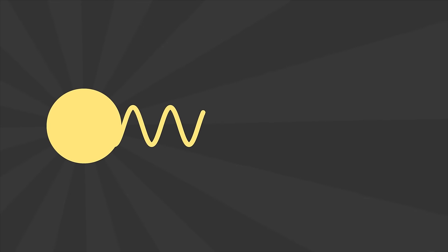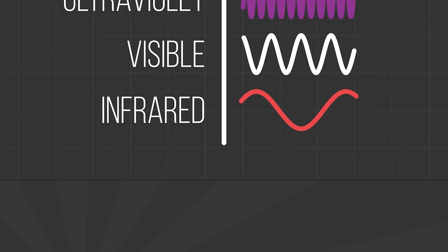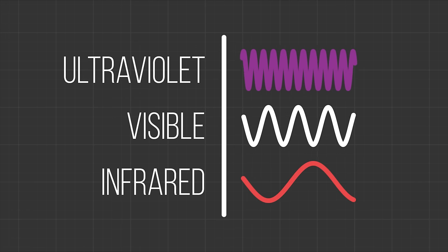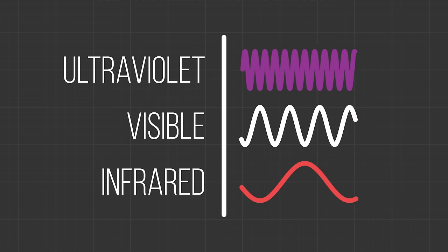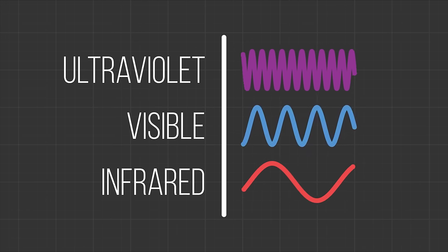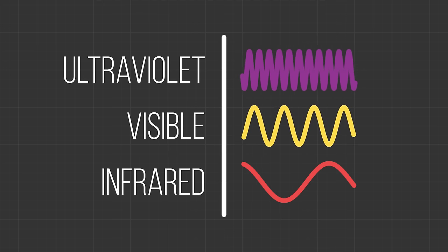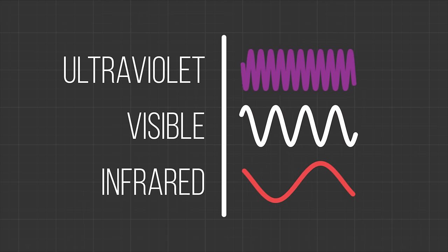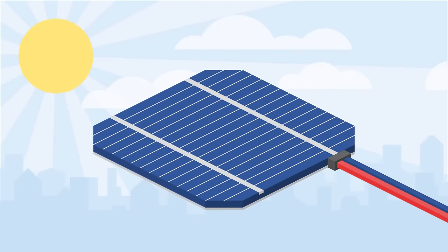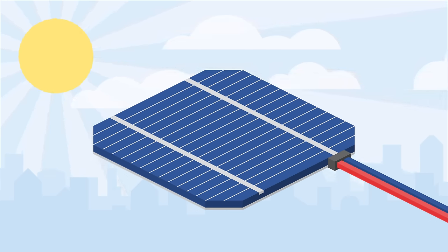The sun emits energy in the form of waves. These waves can range in length from short ultraviolet waves through the rainbow of the visible spectrum to long infrared waves. When the sun is shining, these waves move towards the Earth and hit the surface of the solar cells.